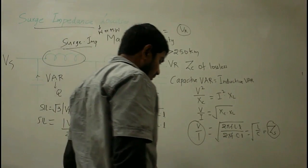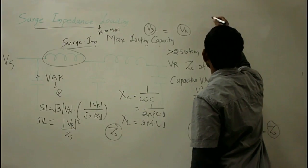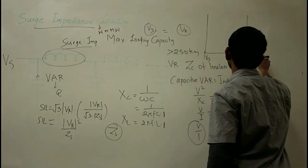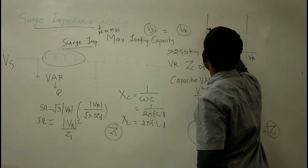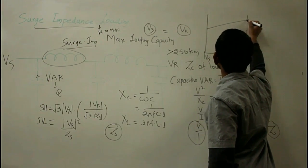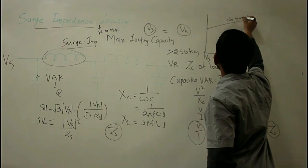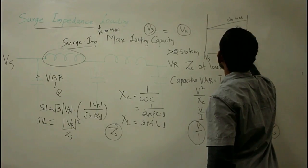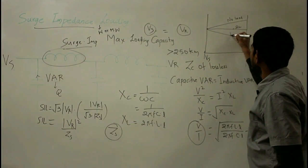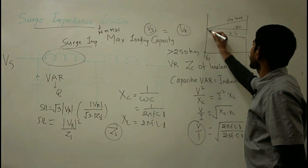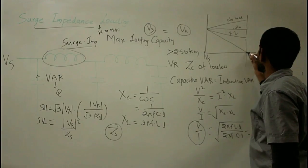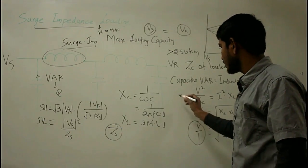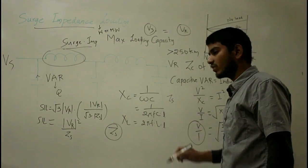Let us plot various voltage profiles for various loadings. For no-load condition, the voltage rises from Vs to VR. The flat voltage profile corresponds to surge impedance loading. For full-load condition, the voltage drops along the line. For short-circuit condition, the voltage drops steeply. The surge impedance ZS — the characteristic impedance of a lossless line — is independent of the length of the transmission line.